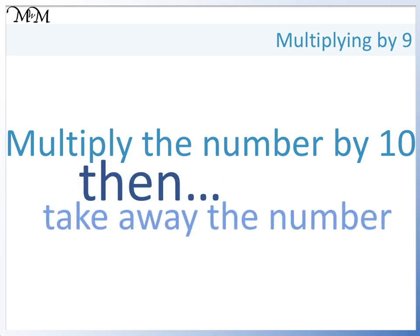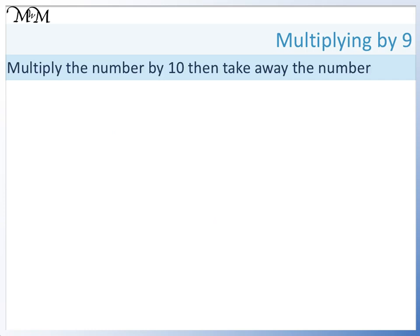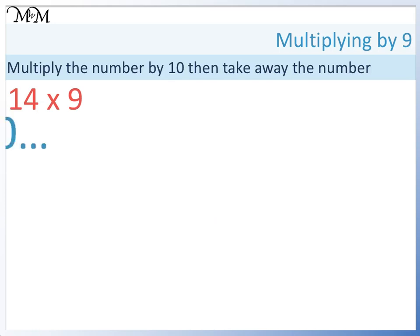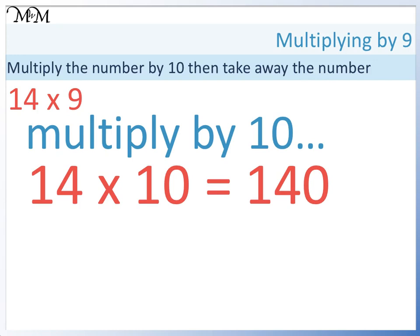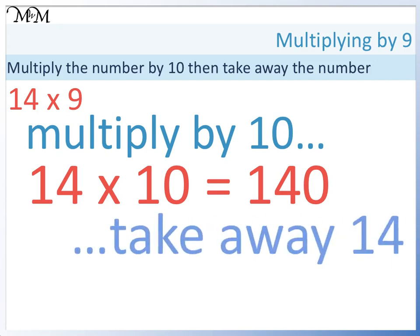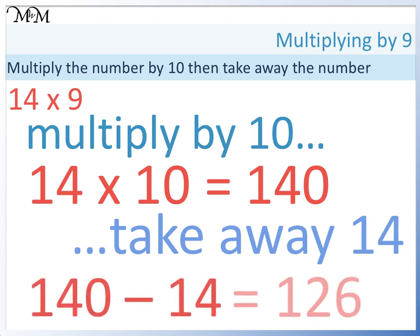Let's look at an example: 14 times 9. We will start by multiplying 14 by 10. 14 times 10 equals 140. We have 10 lots of 14, which is 140. We only want 9 lots of 14, so we take away 1 lot of 14. 140 take away 14 equals 126.